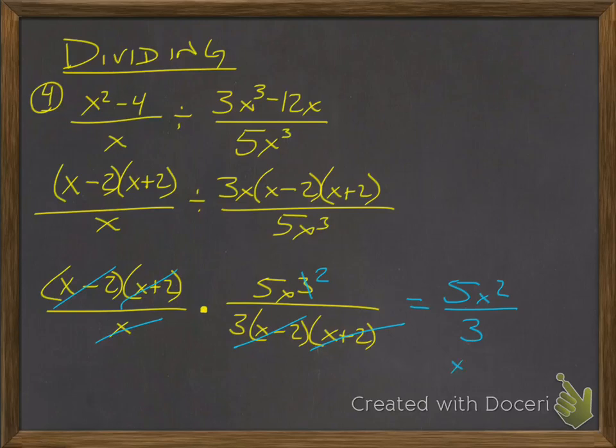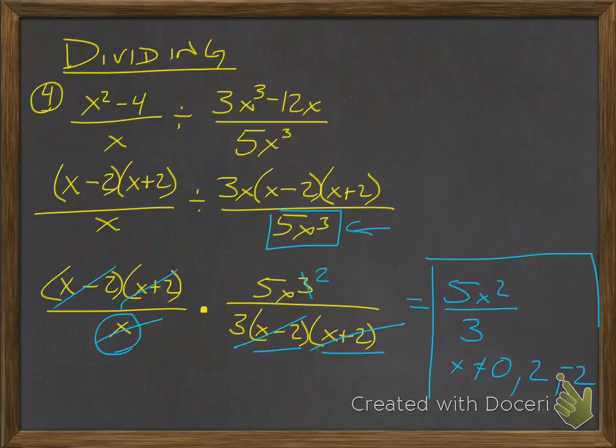And remember, x cannot equal zero, positive two, negative two. And you have to go back to the original denominator as well. Because that's x, it's just an x to the third, that means that x cannot equal zero as well. I already have that, I don't need to list it, but you do need to pay attention to that part of it. Because that was in the denominator, I need to include those in my restrictions as well.